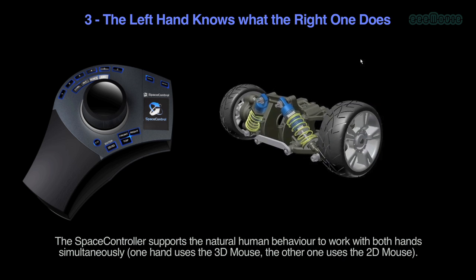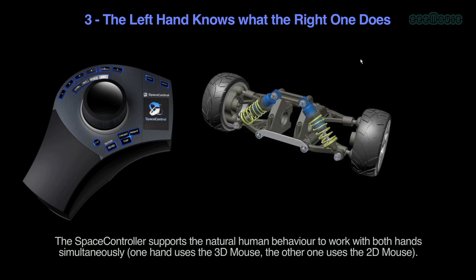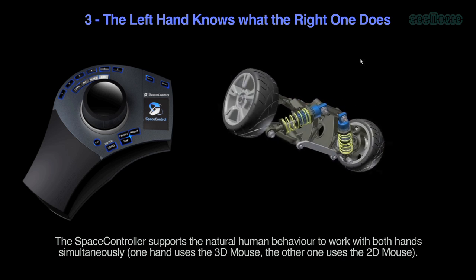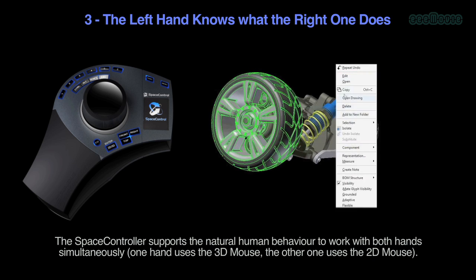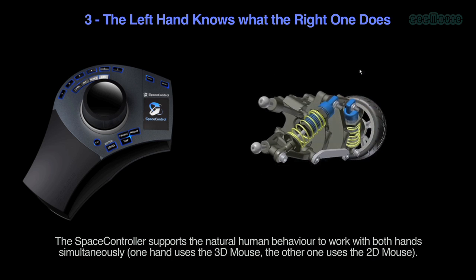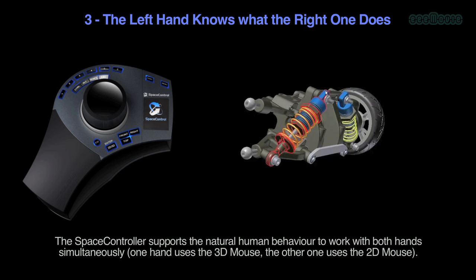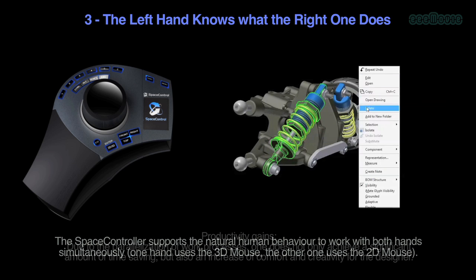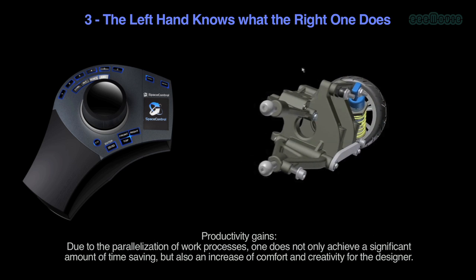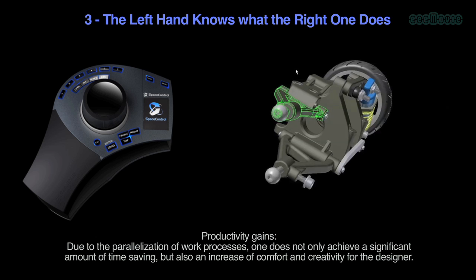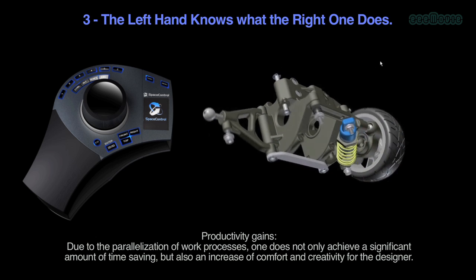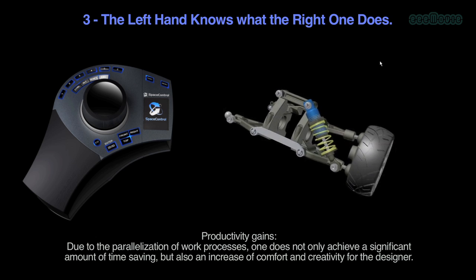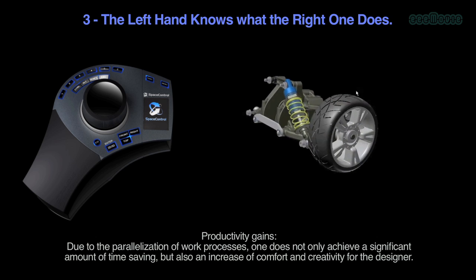The left hand knows what the right one does. The Space Controller supports the natural human behavior to work with both hands simultaneously — one hand uses the 3D mouse, the other uses the 2D mouse. Productivity gains due to the parallelization of work processes means not only significant time saving, but also an increase of comfort and creativity for the designer.